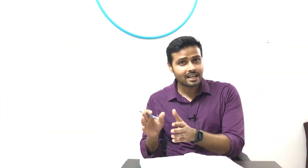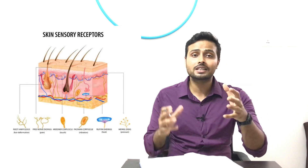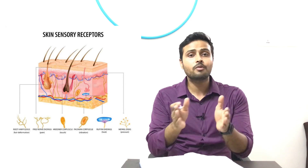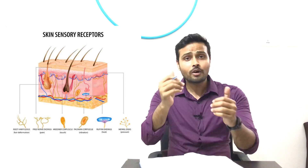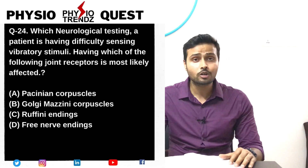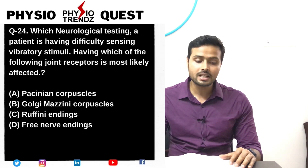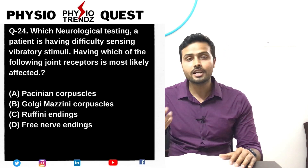This is a kind of direct as well as indirect question, and very easy to interpret if you know which stimuli or which receptors are present where and what is their role. The options given are Pacinian corpuscles, Golgi-Mazzoni corpuscles, Ruffini endings, and free nerve endings.